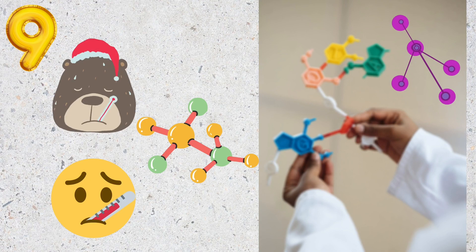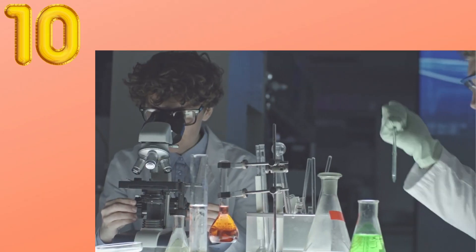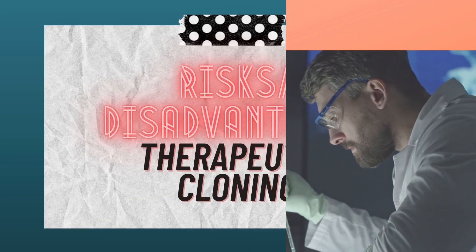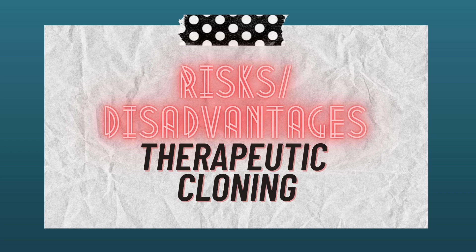Ninth, therapeutic cloning makes it possible to deeply understand the molecular causes of an illness. This can be done by studying embryonic stem cells derived from embryos which are cloned from sick human or animal cells. Tenth, differentiated tissues from embryonic stem cells are great tools for testing recently developed therapeutic drugs.